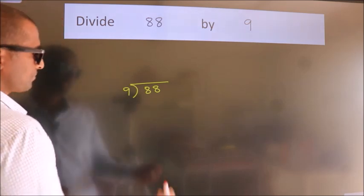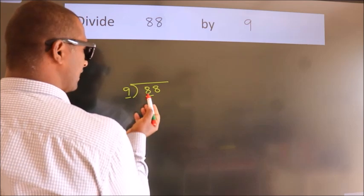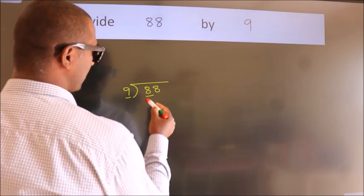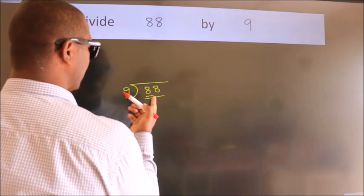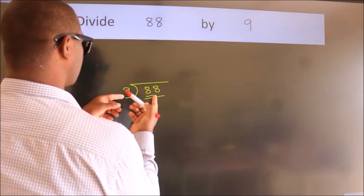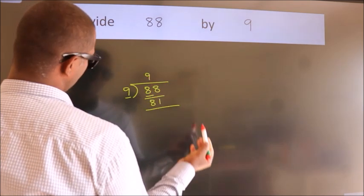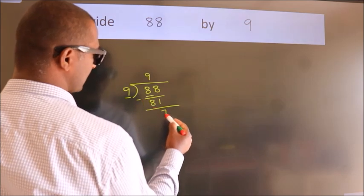Next, here we have 8, here 9, 8 smaller than 9. So we should take two numbers, 88. A number close to 88 in the 9 table is 9 times 9 equals 81. Now we should subtract. We get 7.